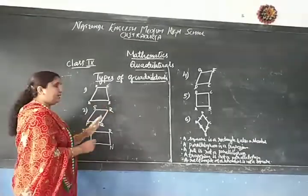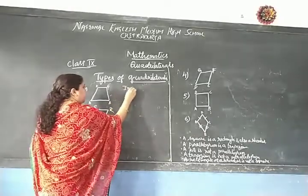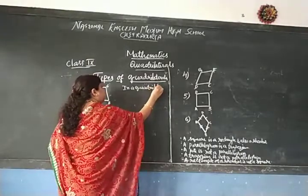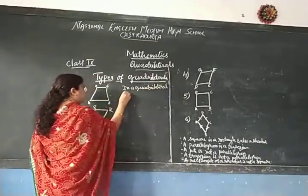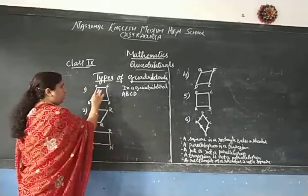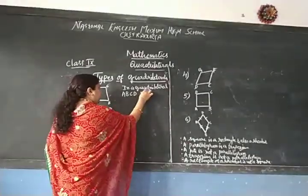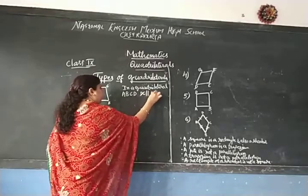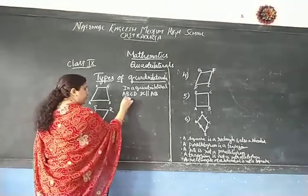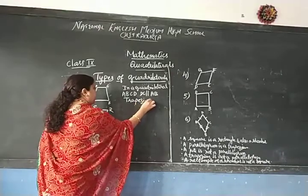Here, the first quadrilateral is ABCD. In this quadrilateral, one pair of the opposite sides are parallel. That is, BC is parallel to AD. So this quadrilateral is called as a trapezium.